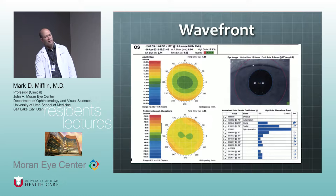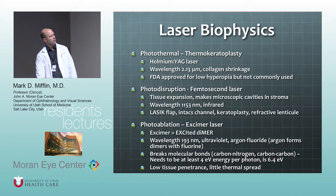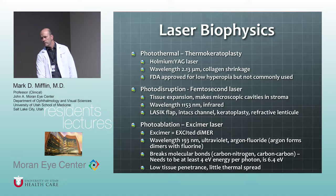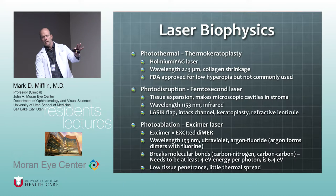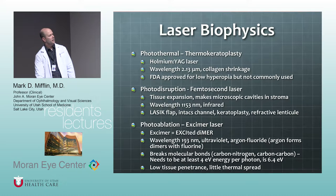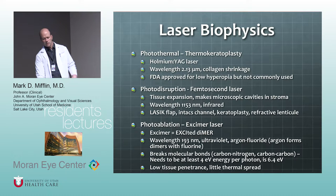Wavefront uses an optical computerized data set collected by a machine called an aberrometer. An aberrometer is a scanner — it shines low-energy, infrared-spectrum collimated light into the eye, which is then reflected out and collected on a sensor. There are a couple of different ways of aberrometry; the most common is Hartmann-Shack, which is what I just described.